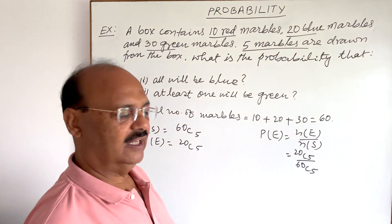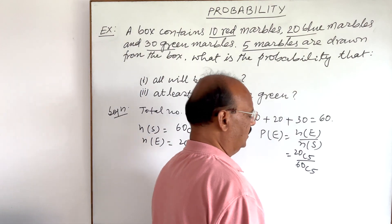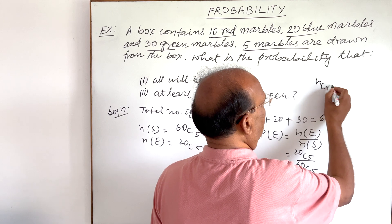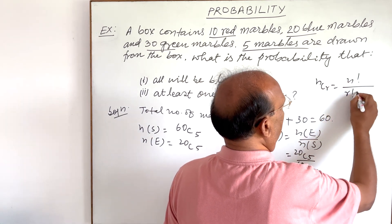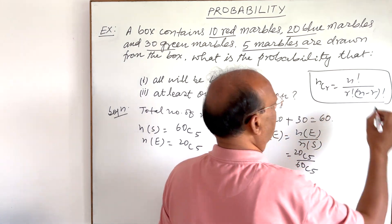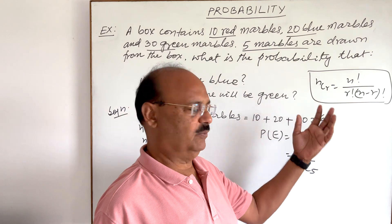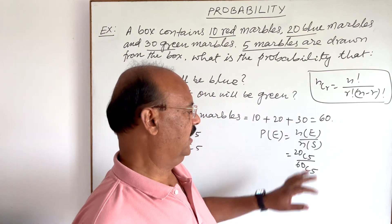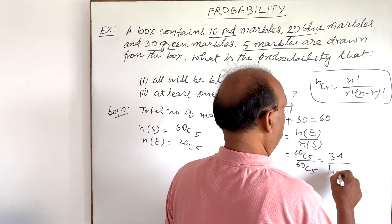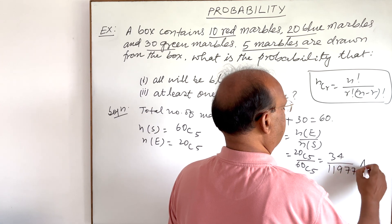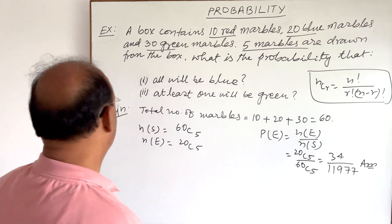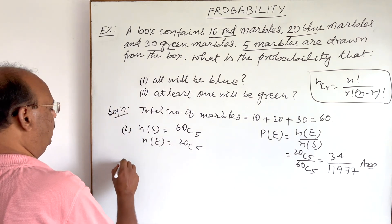By solving these combinations using the formula NCR = N! / (R! × (N−R)!), which is a very important and useful formula used in almost all probability questions, we get the value: 34 divided by 11,977. This is the answer to the first part.